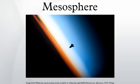The mesosphere is the layer of the Earth's atmosphere that is directly above the stratosphere and directly below the mesopause. In the mesosphere, temperature decreases as the altitude increases. The upper boundary of the mesosphere is the mesopause, which can be the coldest naturally occurring place on Earth, with temperatures below 130 kelvins.